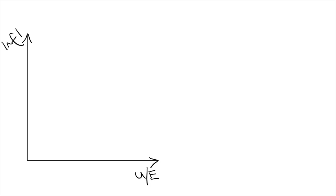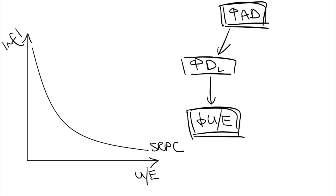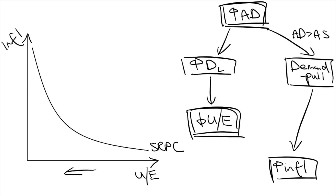In the short run, unemployment and inflation have an inverse relationship, as shown by the short-run Phillips curve. This is because the very thing that causes inflation is the same thing that lowers unemployment, and vice versa — I'm talking about aggregate demand. For example, when aggregate demand is high, it causes the demand for labor to increase and cyclical unemployment to fall. At the same time, an increase in aggregate demand will lead to demand-pull inflation.